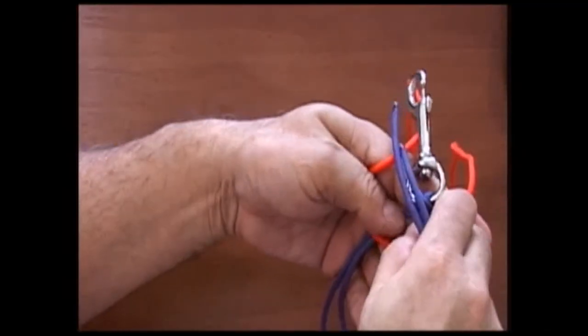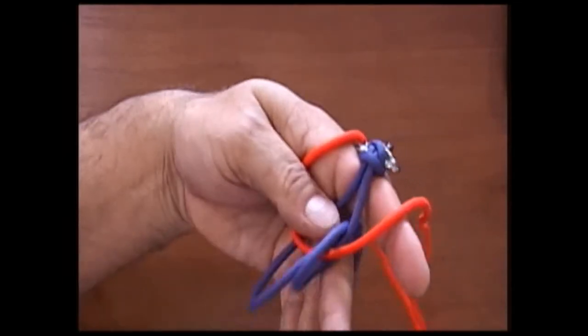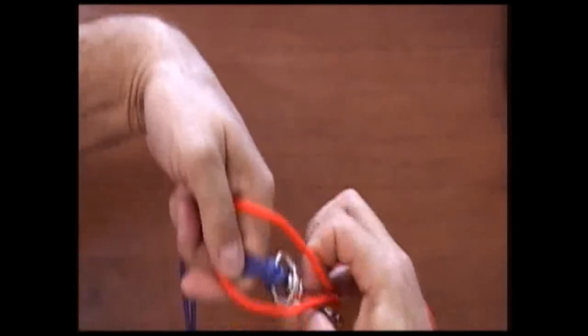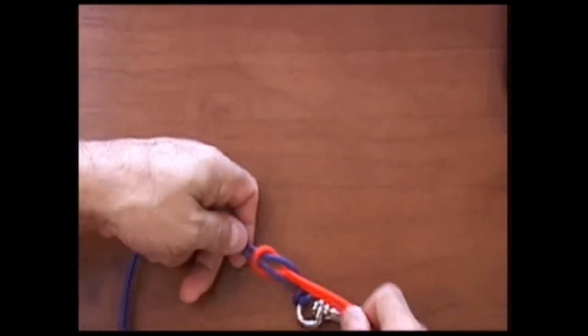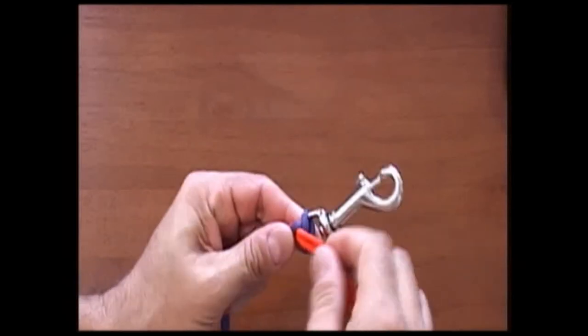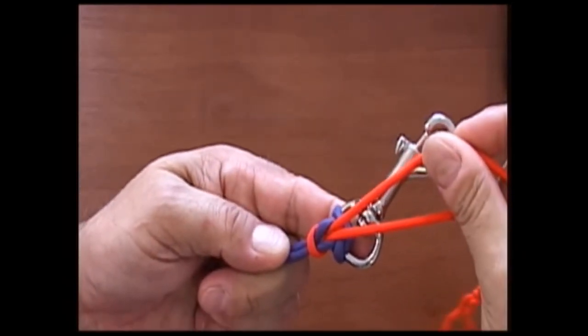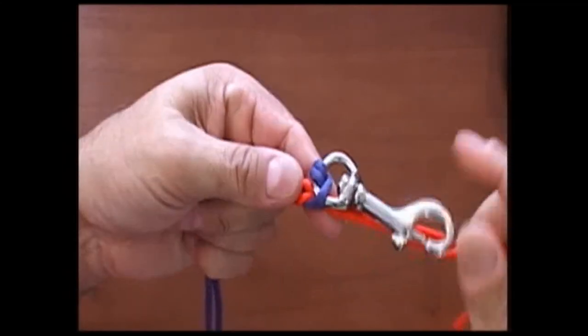So then we put it on there like that, and we split the cord and we pull it up. That's exactly what JD has on his river bar. That's how he starts it. So this is the Paracord Weaver. I just wanted to show you how to attach a buckle or clasp to that river bar.